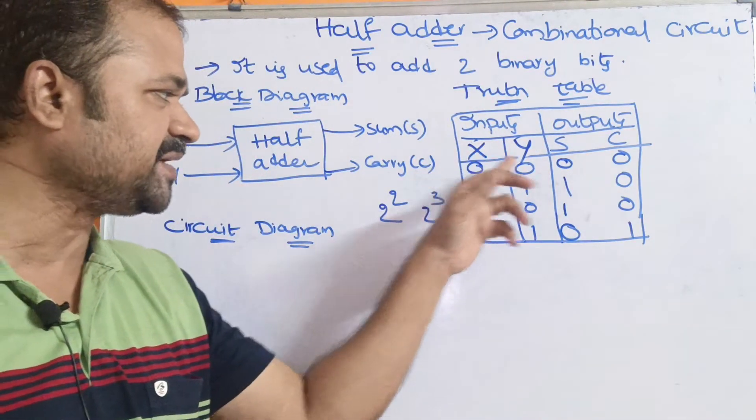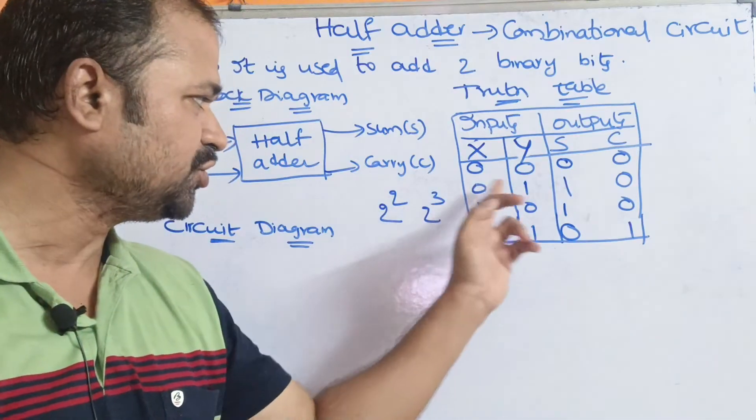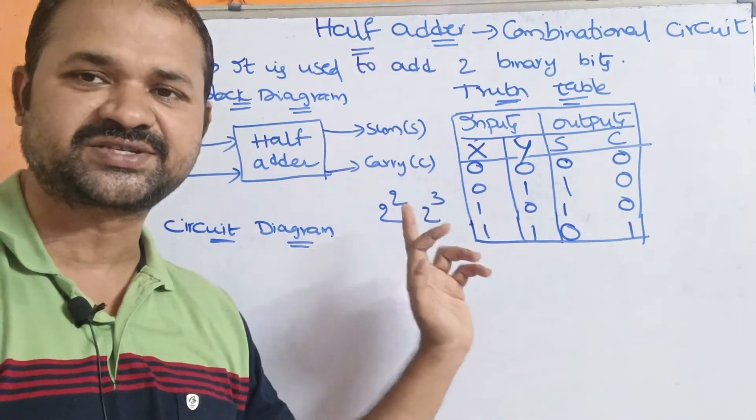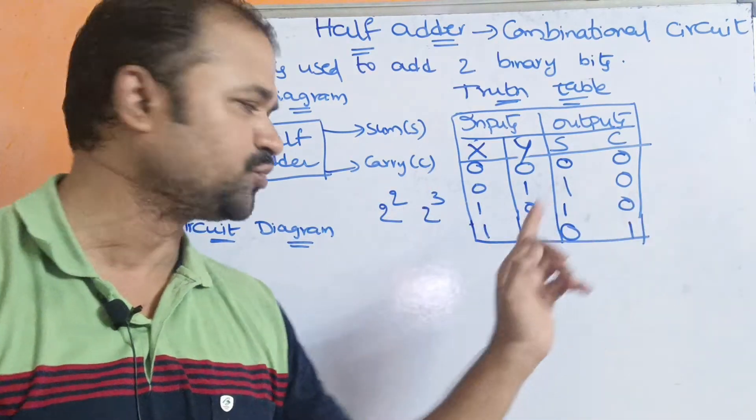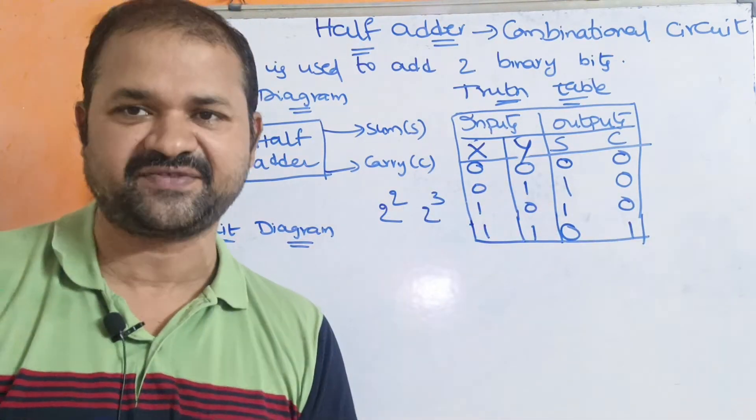Looking at the inputs: 0 and 0 are two bits; 0 and 1 are two bits; 1 and 0 are two bits; 1 and 1 are two bits — likewise for all combinations.